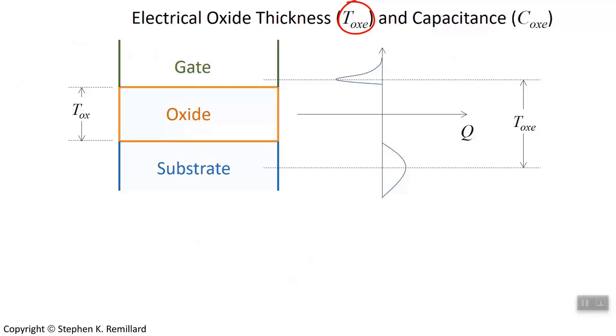And I think you have a good sense of what T sub OX is, the thickness of the oxide layer, and what C sub OX is, it's the capacitance of the oxide layer. But sometimes you see this little E after the OX. That means something slightly different. We call it the electrical oxide thickness.